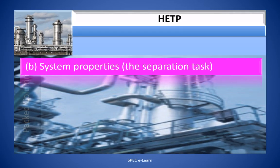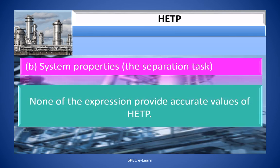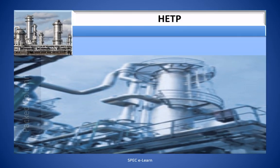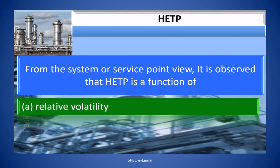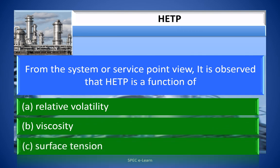Factor B: System properties — that is, the separation task. Several investigators have tried to establish correlations between the HETP and the system fluid properties, but none of the expressions provide accurate values of HETP. From the system or service point of view, it is observed that HETP is a function of: A. Relative volatility. B. Viscosity. C. Surface tension.